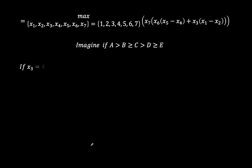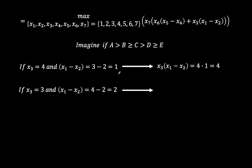Then now we are left with d and e. Still with our imagination, if x3 is equal to 4, x1 minus x2 is 3 minus 2, since these are the only remaining. So the product of x3 and x1 minus x2 is 4 times 1, which is 4. And then if we said x3 is equal to 3, and x1 minus x2 is equal to 4 minus 2, which is 2.